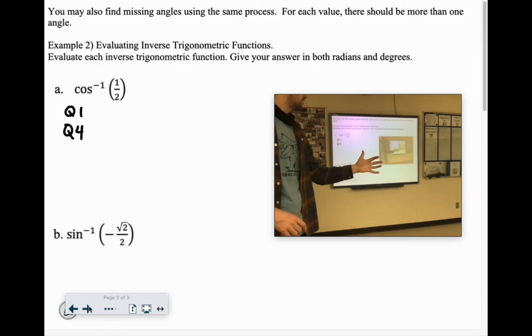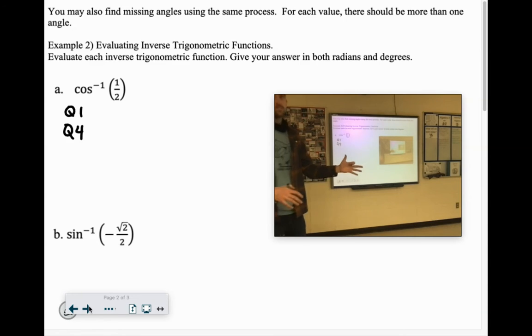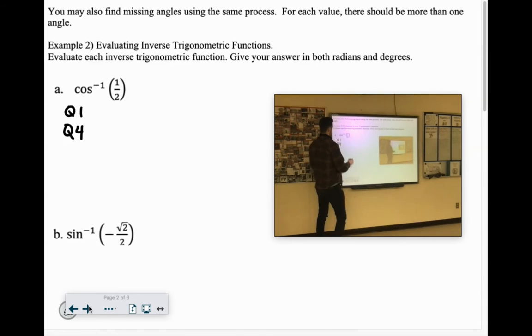Now when can we have the x be 1 half? Remember, the x is our left fingers. So when can I have one finger on the left? That's with our pointer finger down. That represents a 60-degree reference angle. So in quadrant 1, a 60-degree reference angle would be 60 degrees.